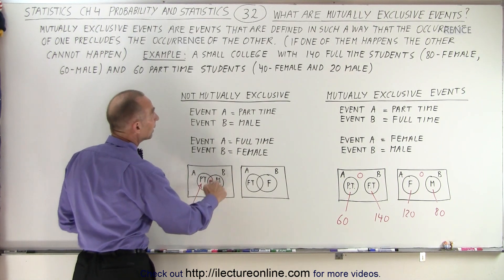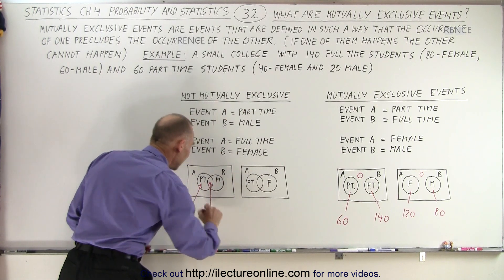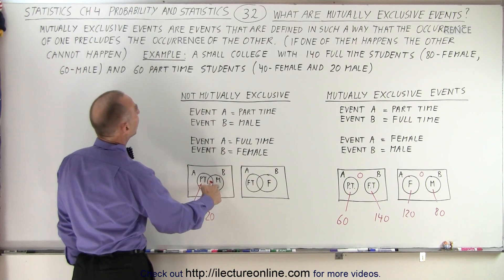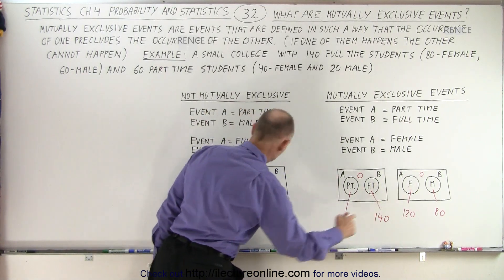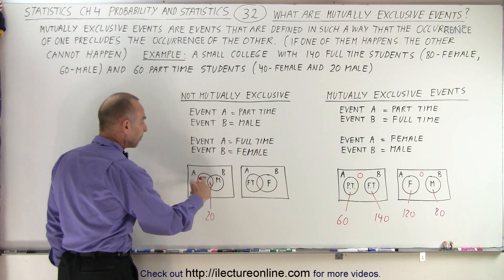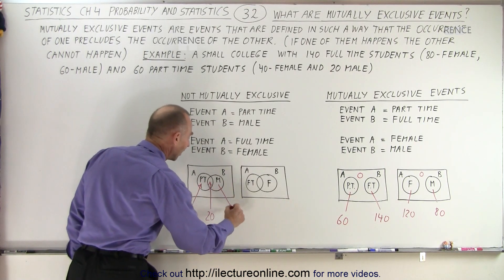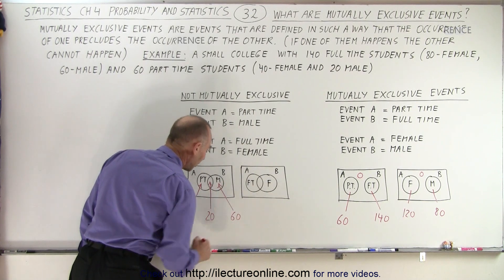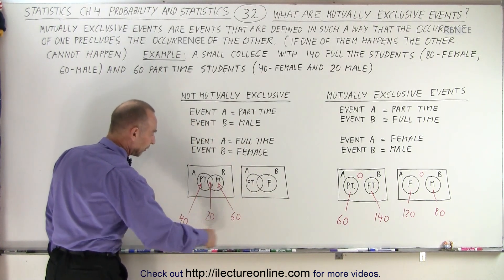Part-time and male: there are 20 that are both part-time and male, so there would be 20 in the overlap. And how many total students are male? We know there's a total of 80 males, but 20 of them are male and part-time. So that means the other 60 are males and full-time, not part-time. So we have 40, 20, and 60 — that's a total of 120.